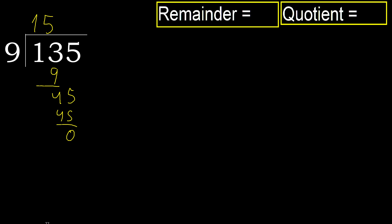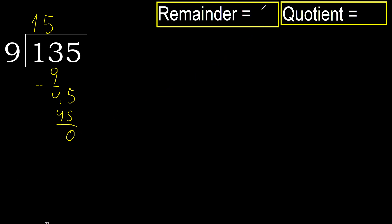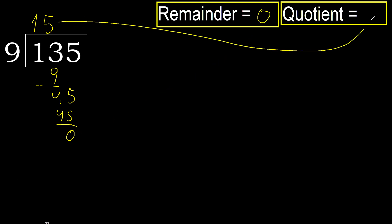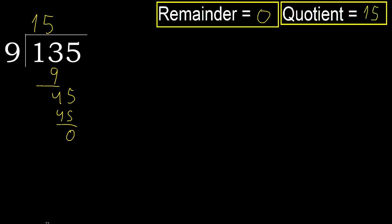There is no number, therefore finish it. 135 divided by 9 is 15. Ok, 15.